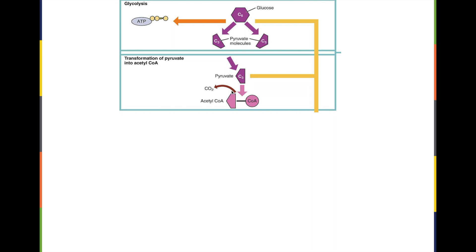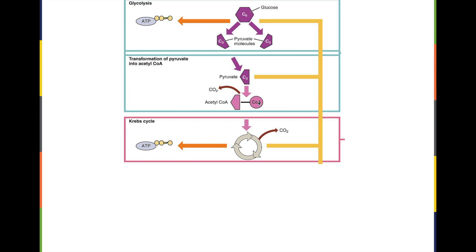During this process, one of the molecules from this three-carbon pyruvate is removed, and it gives us acetyl-CoA. Pyruvate needs to be transformed into acetyl-CoA before the cell can go on. Now acetyl-CoA is ready to go to the next step, which is called the Krebs cycle or the citric acid cycle.